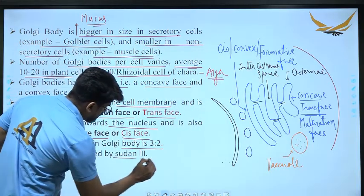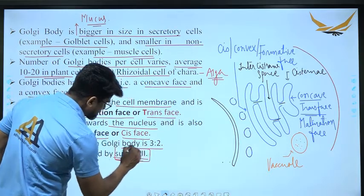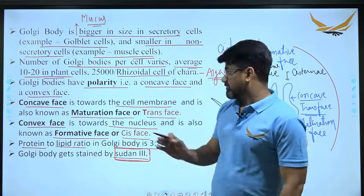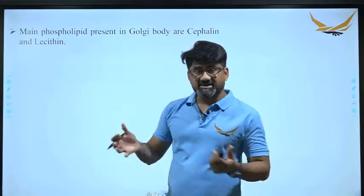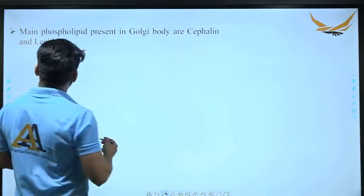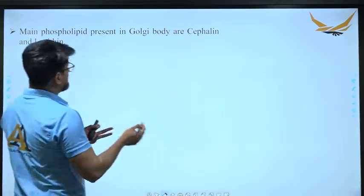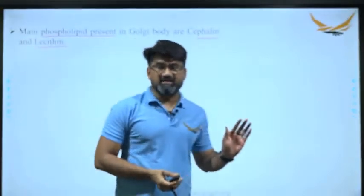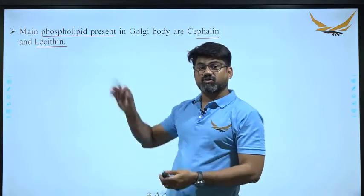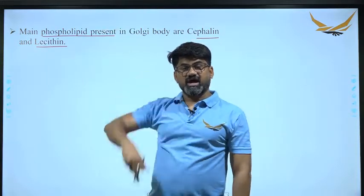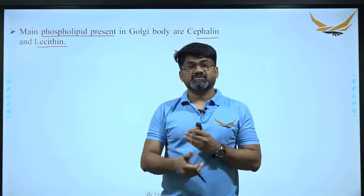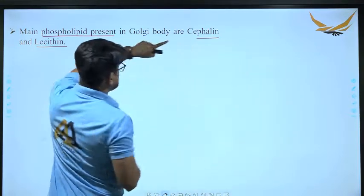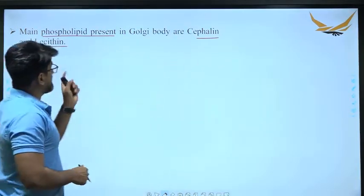To stain Golgi body, the stain used is Sudan III. The main phospholipids present in Golgi body are cephalin and lecithin — the same two types we studied in the plasma membrane.